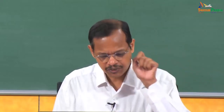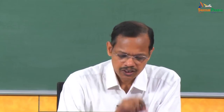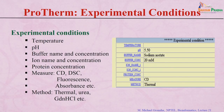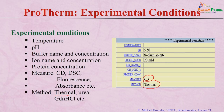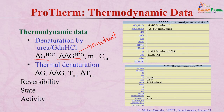We provide the experimental conditions used: temperature, pH, buffer name, concentration, protein concentration, and whether they used CD, DSC, or fluorescence, and which method — thermal or chemical denaturation. For chemical denaturation, we report delta G(H₂O), the slope M, and midpoint CM. For thermal denaturation, we can obtain the Tm, delta Tm, and delta G if the heat capacity is known.